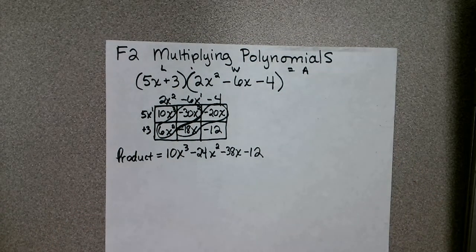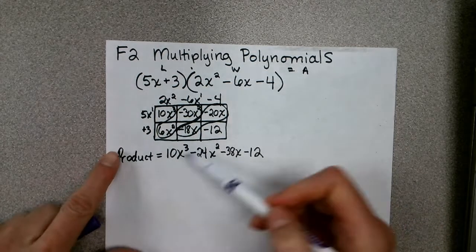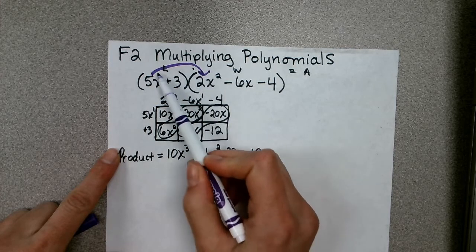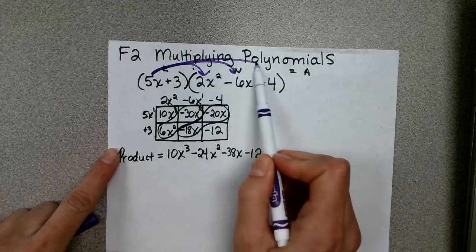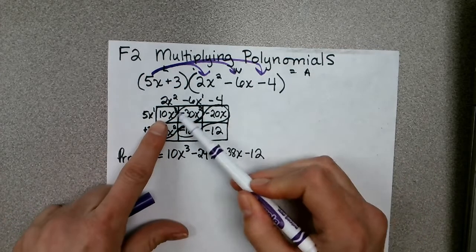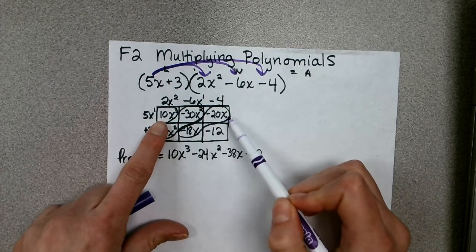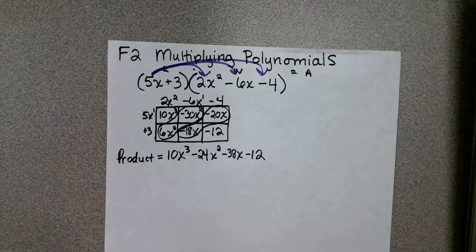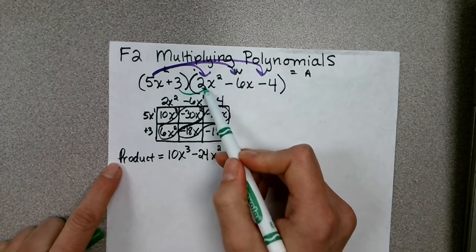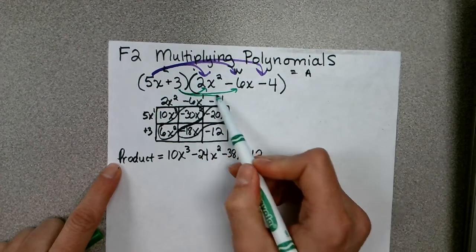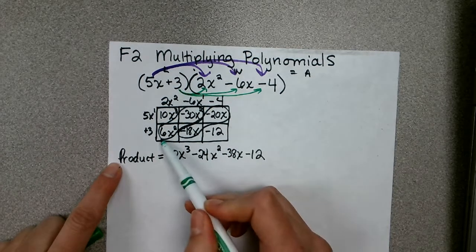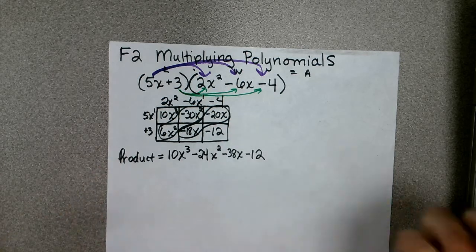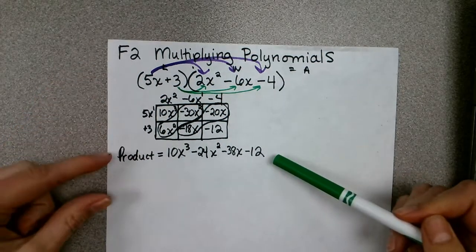You could also do this with the distributive property instead of creating this model. You would just begin by multiplying the 5x times each term in the parentheses, and you'd get the same three terms that we got in our first row of our area model. Then you would distribute the 3 into each of the three terms, and you would get all the terms here in the second row. Then again you would add those together. So either method is going to give you the same product.